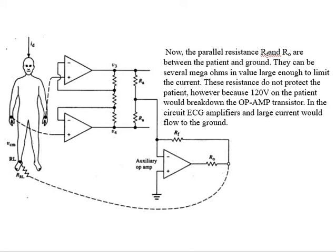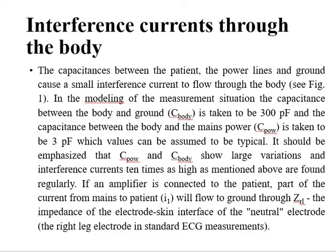In this measurement situation, the capacitance between the body and the ground can be taken as up to 30 picofarads — 30 picofarads is assumed. This capacitance between the power line and the body can be reduced by providing another earth rod through the skin.